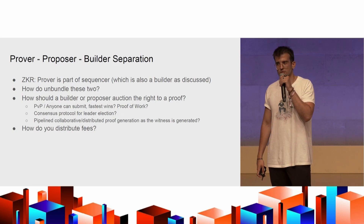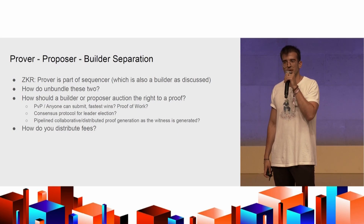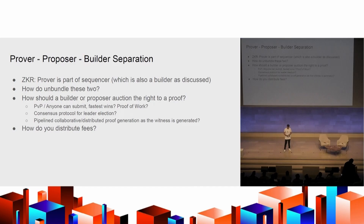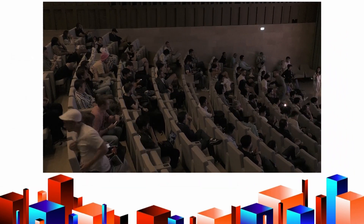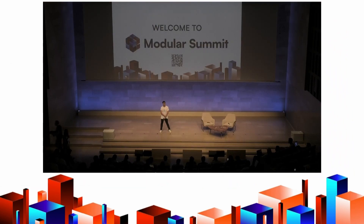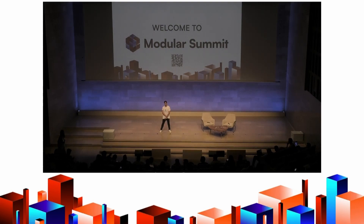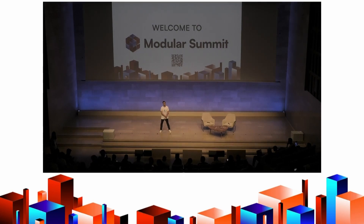I have three minutes — it would be good if we can do some questions. Thank you. Can you elaborate a bit more on how cross-chain or cross-L2 interaction can be facilitated by this shared sequencer model, for those of us who are unfamiliar with the literature?